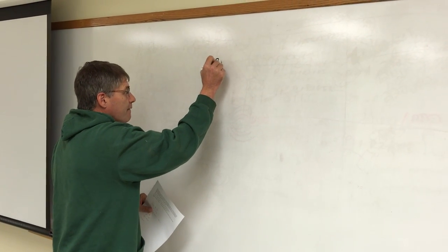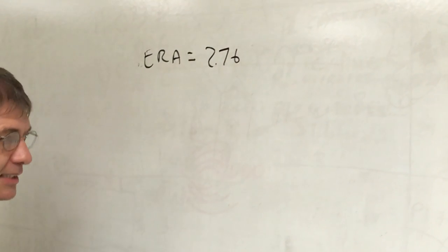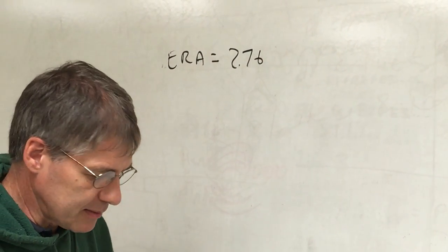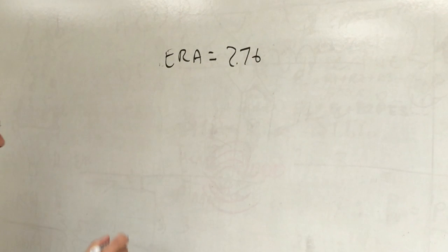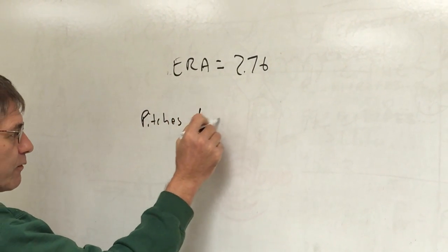So again, I have an ERA of 2.76. That means in 9 innings in 1 game, he's going to average 2.76 runs. Let's say he pitches for 4 games.